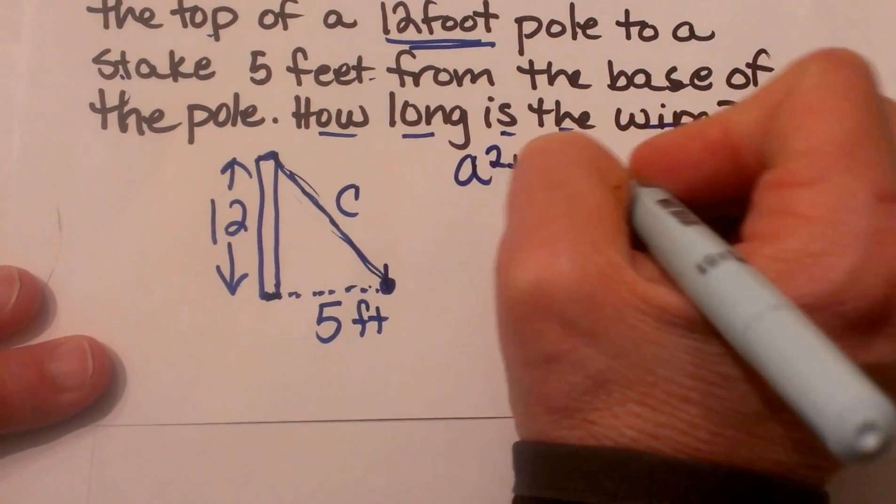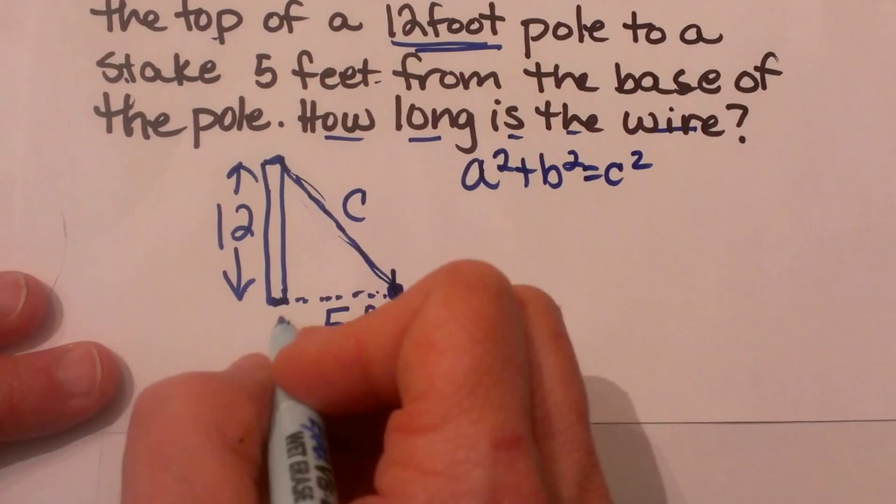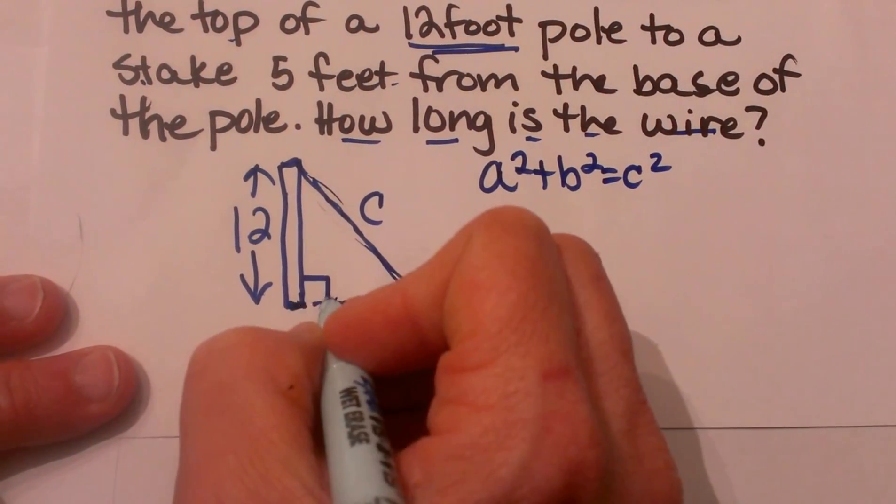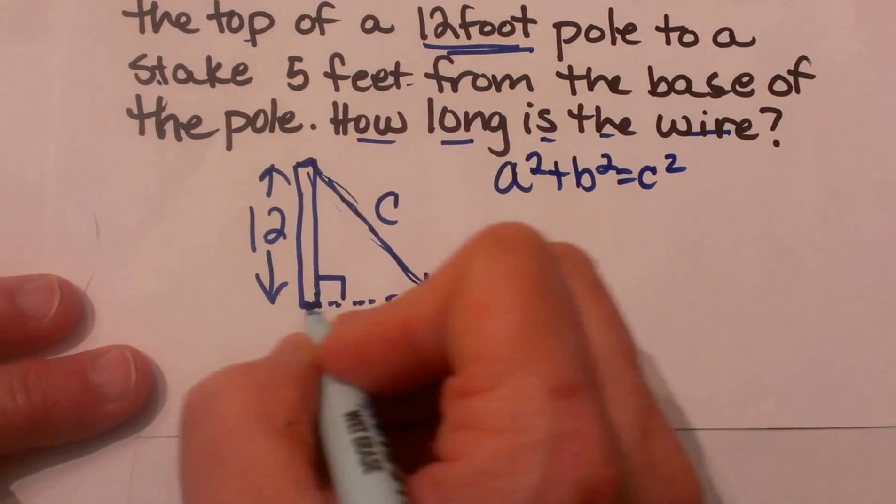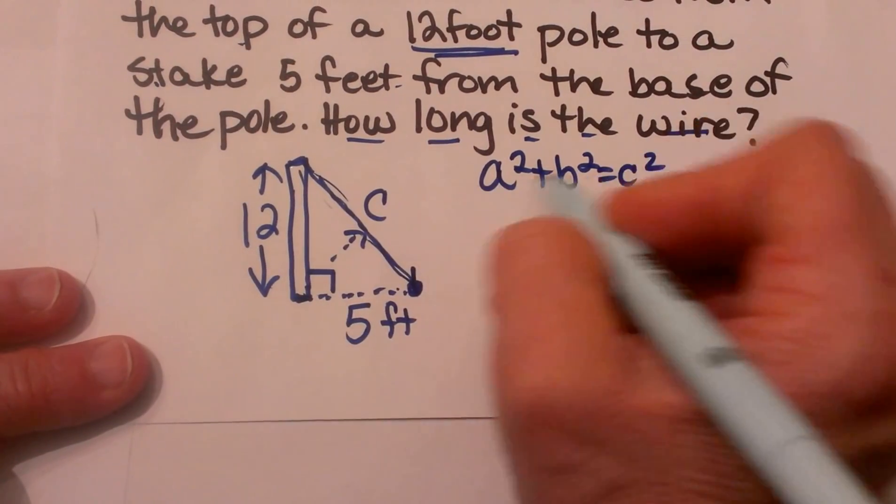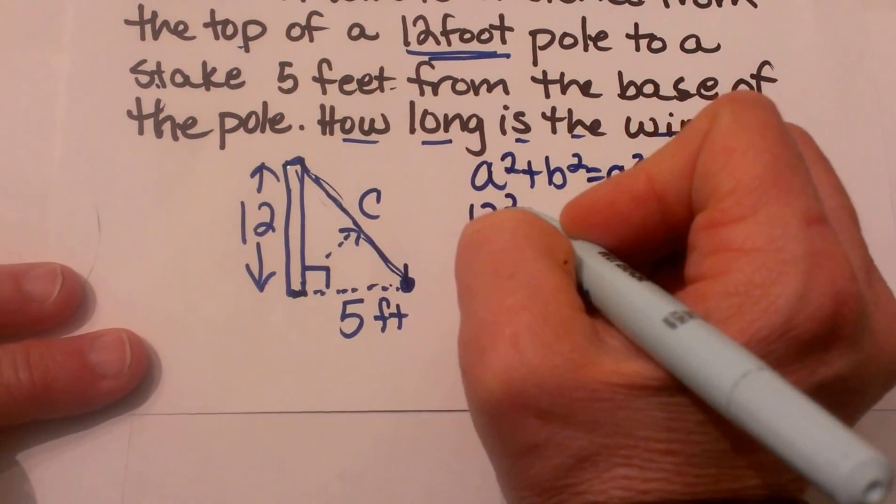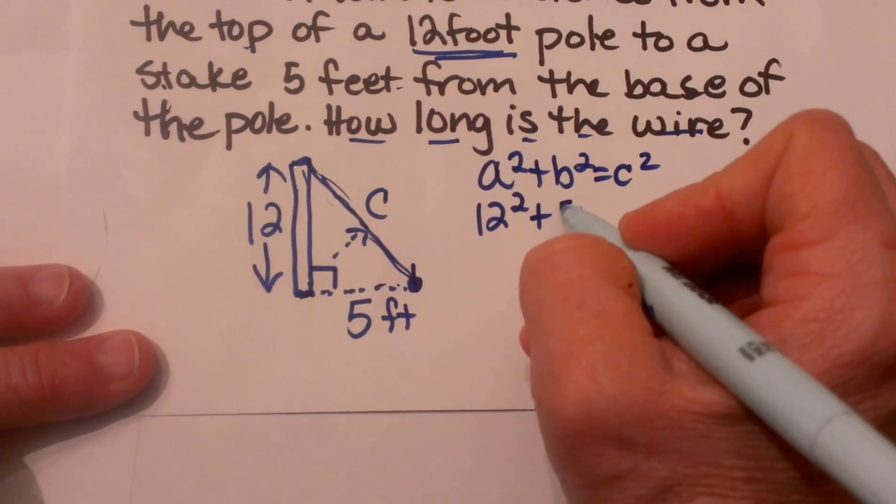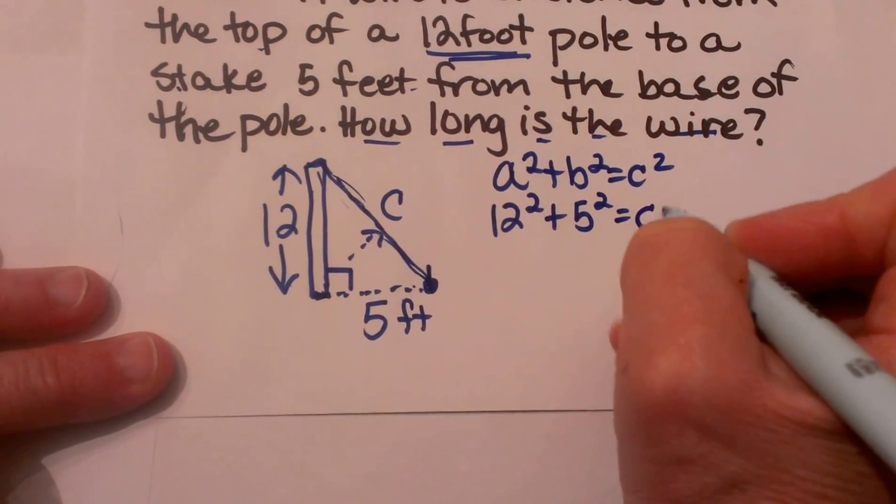A squared plus b squared equals c squared. We know both of the legs because we know the right triangle is where the pole hits the ground. So this is our hypotenuse. We can interchange a and b. I'm just going to put 12 in for a and square it, and 5 in for b and square it and solve for c.